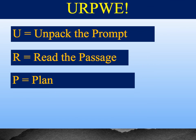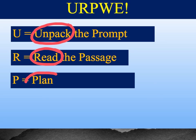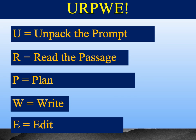We're going to use the acronym ERPWE to help us today as we plan about how we're going to write our extended response. The U says we're going to unpack the prompt — in other words, what is the prompt telling us to do? Then we're going to read through the passage. And then we're going to create a plan for how we're going to attack this response. The last two parts of ERPWE are W, which stands for write — we're going to go ahead and write our response — and if we have some time left at the end, we're going to take a few minutes and edit it.